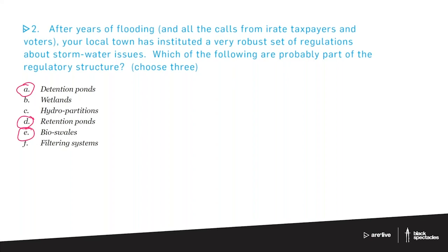Other correct answers that could have been listed include: porous pavers instead of hard surface parking, green roofs that absorb water and let it evaporate, porous concrete, and cisterns that collect water from roofs or parking for irrigation. Of the six options given, detention ponds, retention ponds, and bioswales are the best answers.